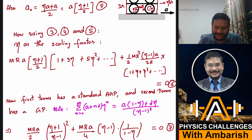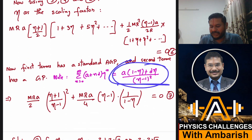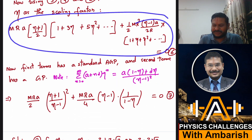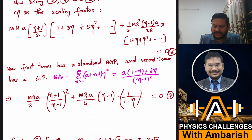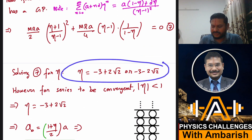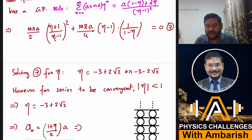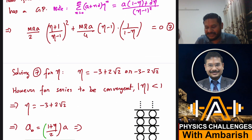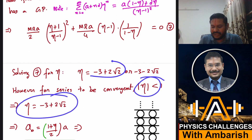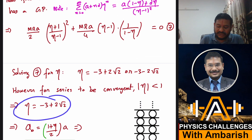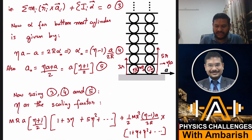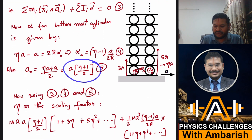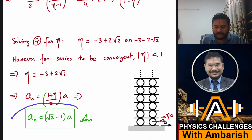Using the standard formula for the sum of an AGP, I write out the full expression, cancel common factors of MRa, and solve for η. This yields two values of η. We cannot have |η| > 1, otherwise the series diverges and the sum wouldn't exist — but since angular momentum must be zero, we must choose the root with |η| < 1. That root is η = −3 + 2√2. Substituting back into a₀ = (1+η)a/2, the final answer is a₀ = (√2 − 1)·a.